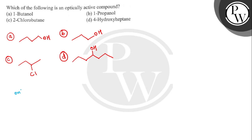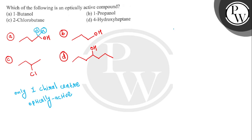Basically, if a compound contains only one chiral center, it is known as an optically active compound — it will always be optically active. A chiral center is a carbon with sp3 hybridization containing four different substituents (a, b, c, d). That carbon is known as a chiral carbon.